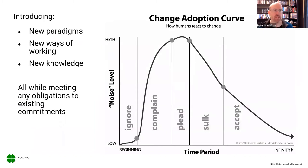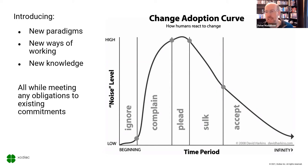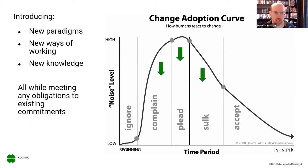As we introduce all these new paradigms, new ways of working, and new knowledge, we've also had to ensure we're still meeting existing organizational commitments. This often ends up with people ignoring the changes and then complaining: 'I don't want to do this. If you change the way I do things, everything's going to go horribly bad.' To sulking: 'Now you've done it — everything's going to break.' To finally accepting it. Our role as change agents is to help drive this change adoption curve down so people can come together, understand, and move forward.